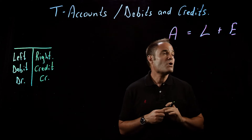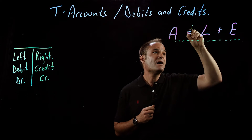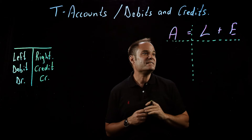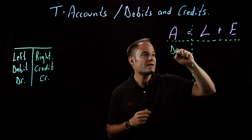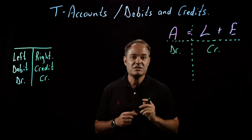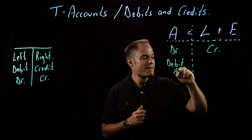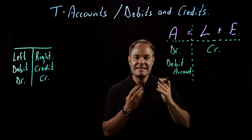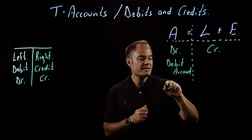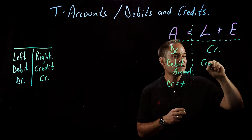Let's go back to our accounting equation over here. I can turn that into a little T. What you'll see is that on this side of the T, the asset side is the debit side. The liability and equity side of the equation is the credit side. Assets are referred to as debit accounts. What that means is that when we debit an asset, or if we wish to increase an asset, we debit it. A debit on the asset side — DR equals plus. The credit accounts over here, liabilities and equity,